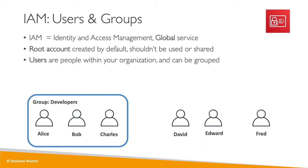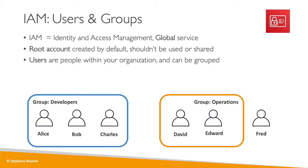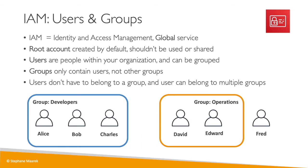David and Edward also work together, so we're going to create an operations group. Now we have two groups within IAM. Groups can only contain users, not other groups — that is very important to understand. Some users don't have to belong to a group; for example, Fred is alone and does not correspond to any group. That is not best practice, but it is something you can do in AWS.